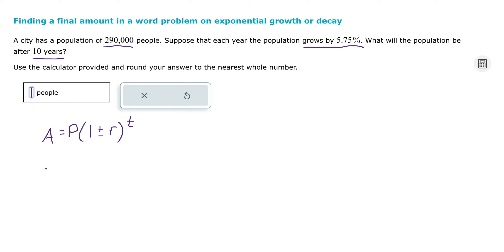So our principal here is the 290,000 people. And then our population here is growing, so that means we're going to use a plus sign. This problem category has both growth and decay problems in it. So if it's increasing or growing, you would use the plus.